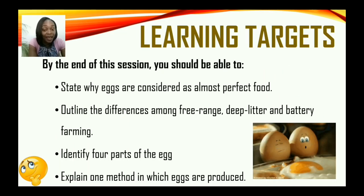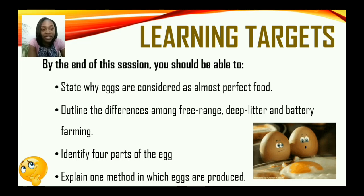Learning targets. By the end of this session, you should be able to: state why eggs are considered as almost perfect food, outline the differences among free-range, deep litter and battery farming, identify parts of an egg, and also explain one method in which eggs are produced.